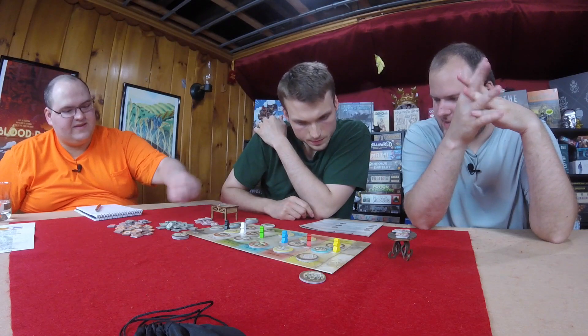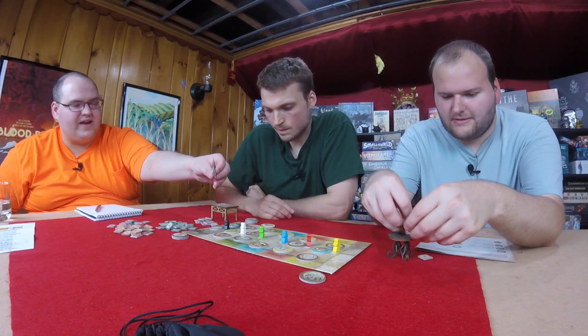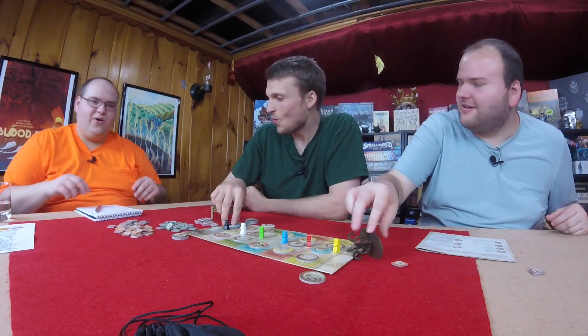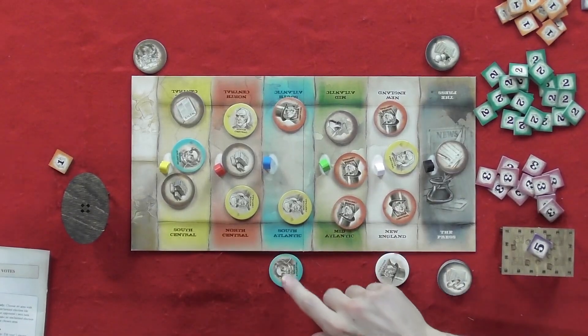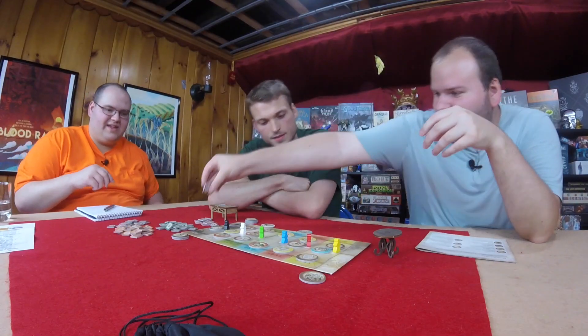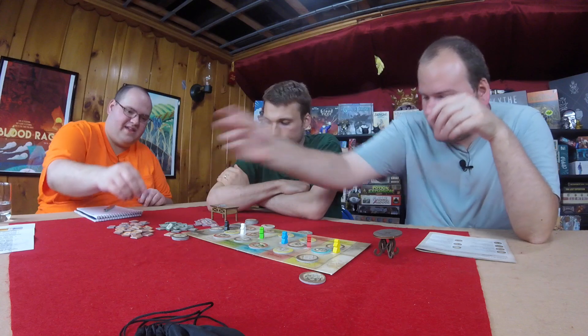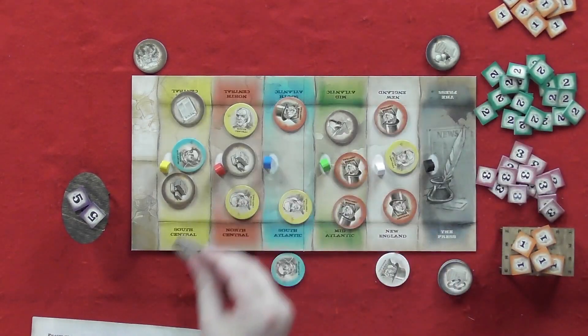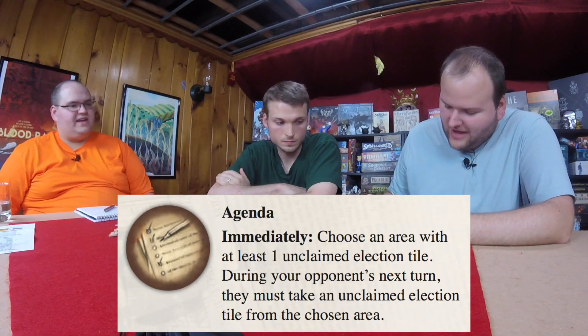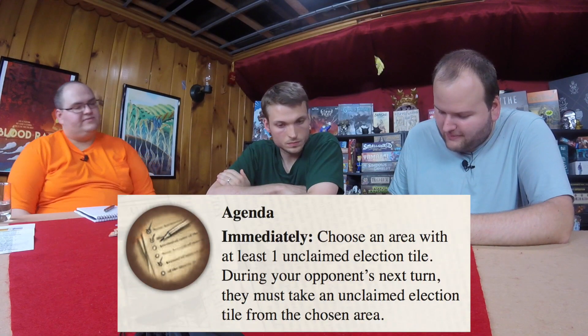They swap the outburst table score tokens, giving Graham a cleaner stack. Graham takes the South Atlantic elector after emptying that section, earning another turn. He then plays an agenda campaign action: he chooses an area with at least one unclaimed tile, and his opponent must choose a tile from that area on their next turn. He chooses South Atlantic.